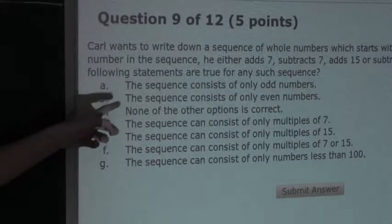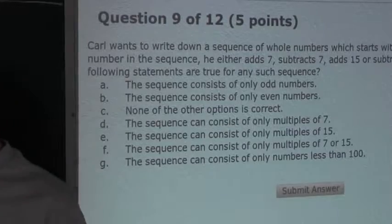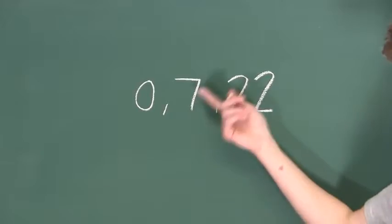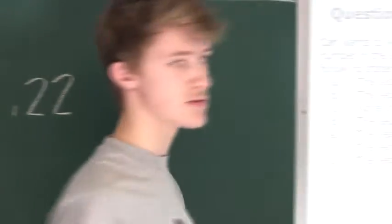Now option B says the sequence consists of only even numbers. Well, we can use the same counterexample sequence. And we can see here 7 is an odd number. It ends in 7, so therefore option B is wrong.